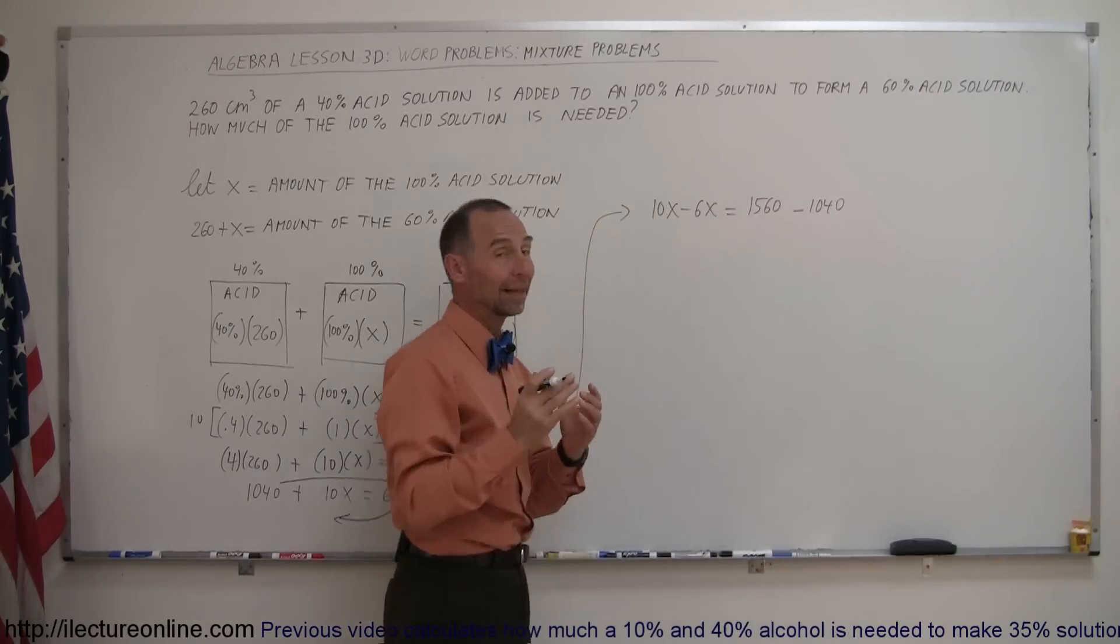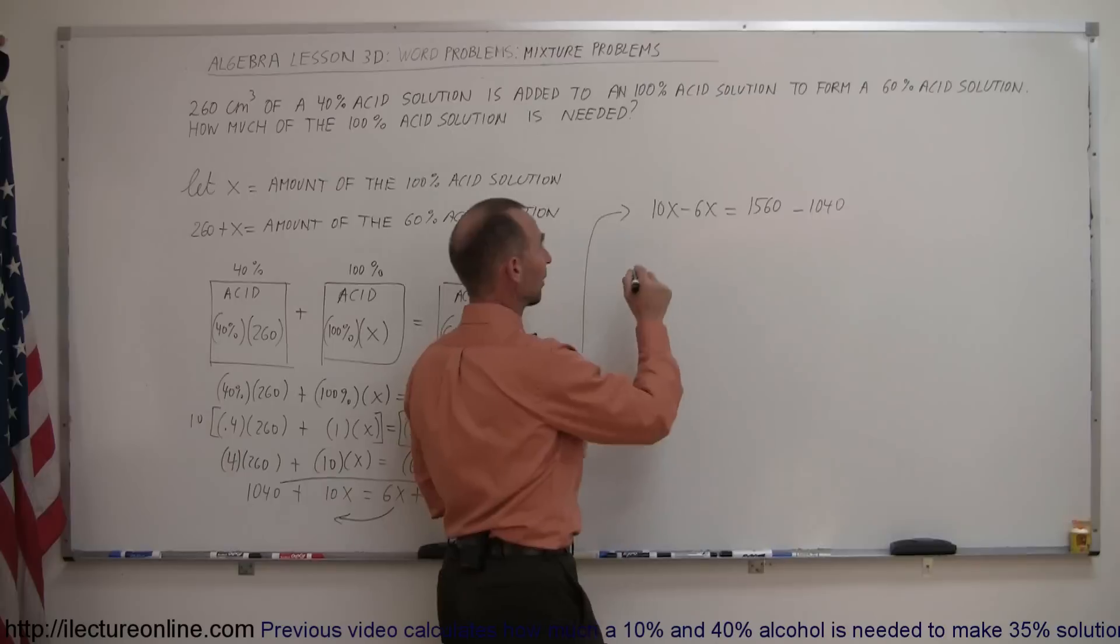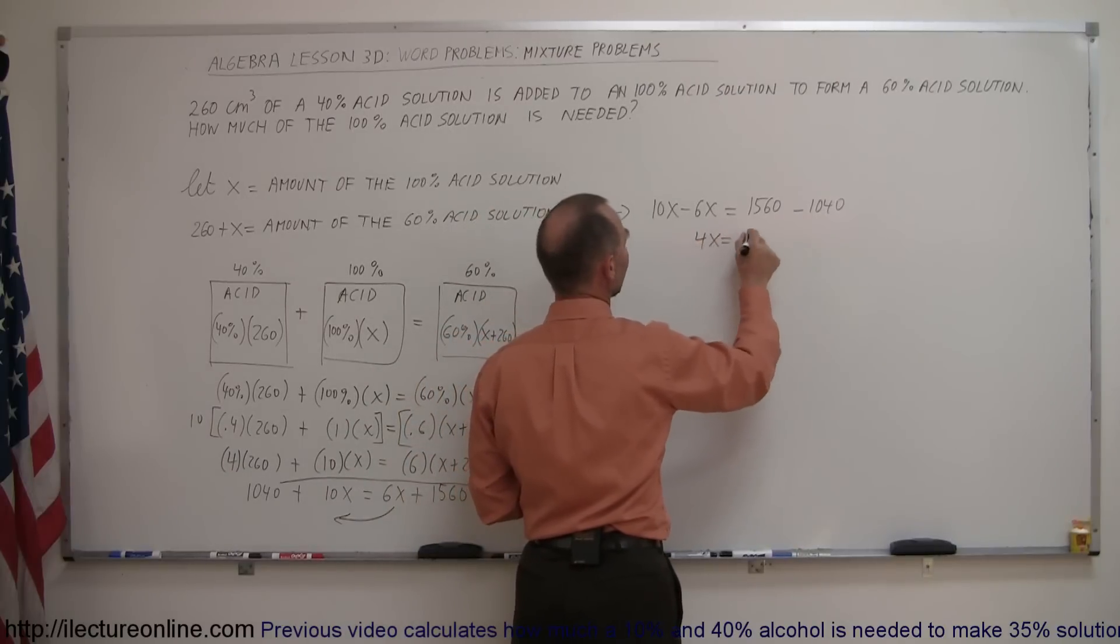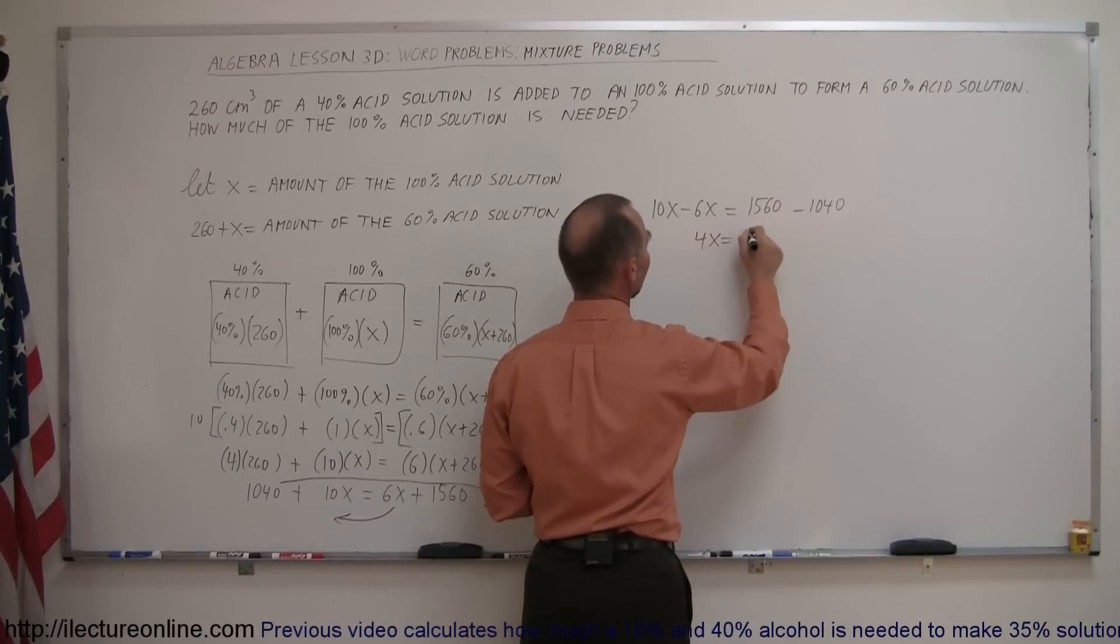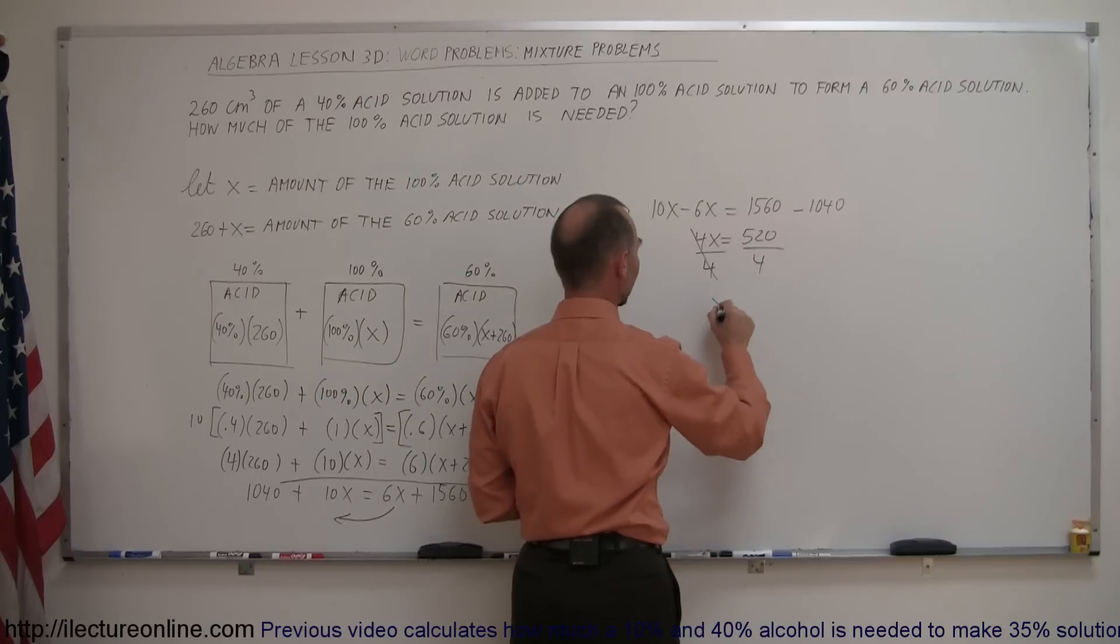So now we can combine like terms on both sides of the equation. On the left side, we get 4X, equals, on the right side, we get 520. And finally, we divide both sides by the numerical coefficient of the X, that cancels out, we have X is equal to...